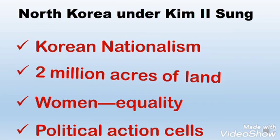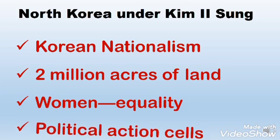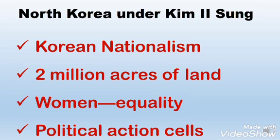Over 2 million acres of land were redistributed under a month. Women were guaranteed equality under the law. And political action cells were formed to educate the population. In June of 1949, both the Soviets and Americans left the peninsula.